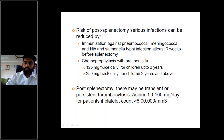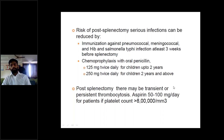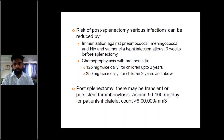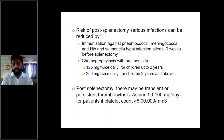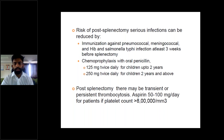Chemoprophylaxis with oral penicillin — 125 mg twice daily for children up to 2 years, 250 mg twice daily for children above 2 years — should be given post-splenectomy. Post-splenectomy, there may be transient or persistent thrombocytosis. Platelet count may rise from the normal range of 1.5–4.5 lakh per cubic millimeter to around 15 lakh per cubic millimeter. This is not alarming but should be monitored. If platelet count is more than 8 lakh, aspirin 50–100 mg per day should be given.